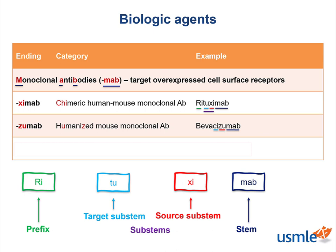Is this true? Its clinical use is for colorectal cancer, renal cell carcinoma, non-small cell lung cancer, and angioproliferative retinopathy, by targeting VEGF, or vascular endothelial growth factors. There's a hint in the prefix that helps you remember it is targeting blood vessel formation.